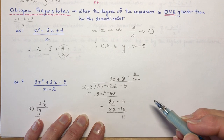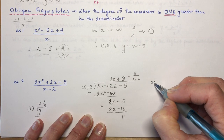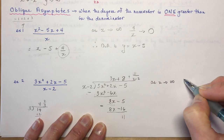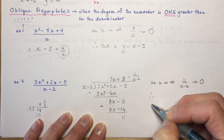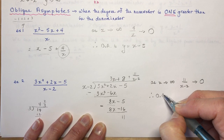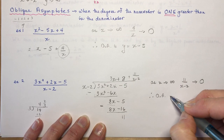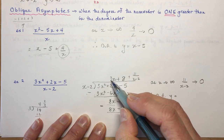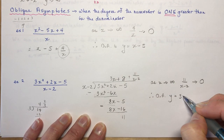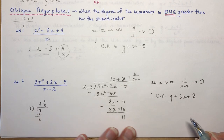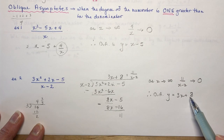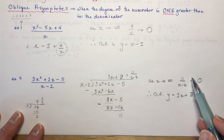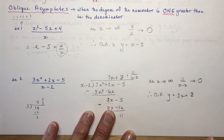Now make your statement: as x approaches infinity, 11/(x−2) approaches 0. Therefore the oblique asymptote is y = 3x + 8. When doing a complete analysis you would graph this line with y-intercept 8 and slope 3.